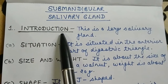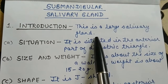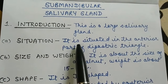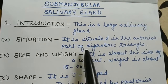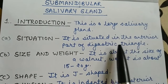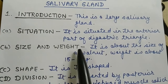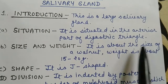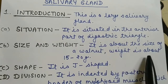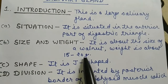First point is its introduction. This is a large salivary gland. Situation: it is situated in the anterior part of the digestric triangle. Size and Weight: it is about the size of a walnut, and its weight is approximately 15 to 20 grams.